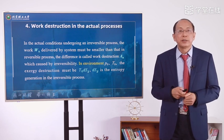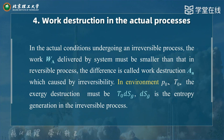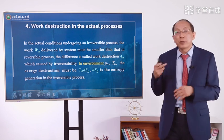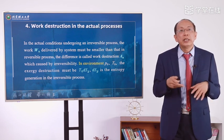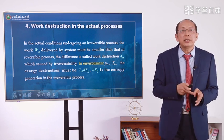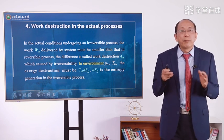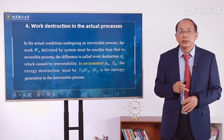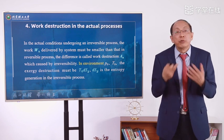In active conditions, undergoing an irreversible process, the work WA delivered by the system must be smaller than that in a reversible process. The difference between active work and reversible work is called work destruction, expressed as AN. In environment conditions P0 and T0, the exergy destruction equals T0·DSG, where DSG is the entropy generation in the irreversible process.